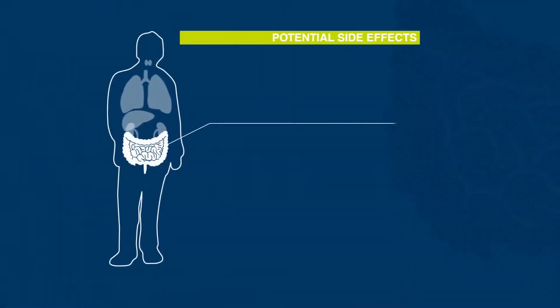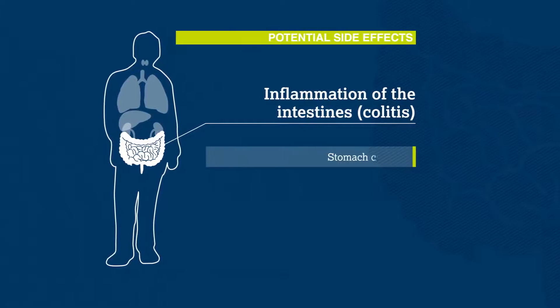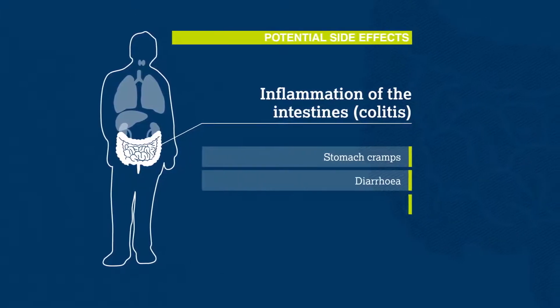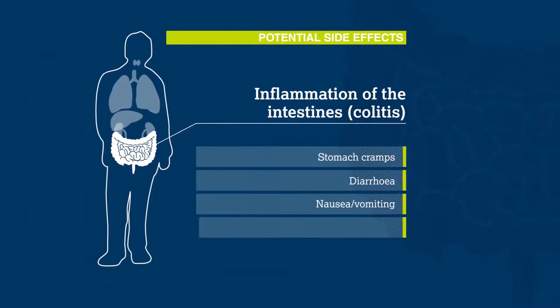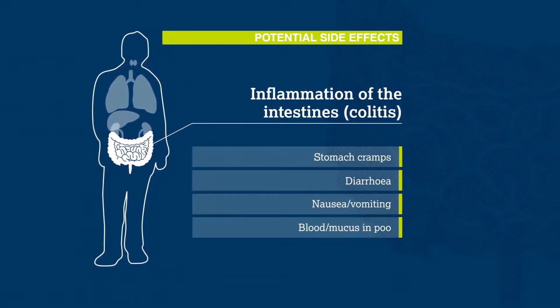Other patients may have intestinal problems, such as stomach cramps, diarrhea, or nausea and vomiting. Some might find blood or mucus in their poo.